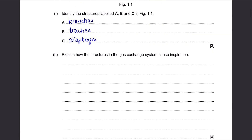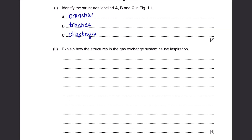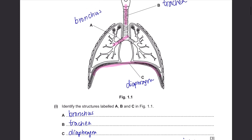Explain how the structures in the gas exchange system cause inspiration. Inspiration means breathing in — basically inhaling. To allow air inside your body, firstly the diaphragm here needs to contract. As it contracts, it will become flatter, allowing more space. Then at the same time,